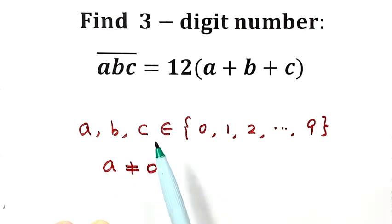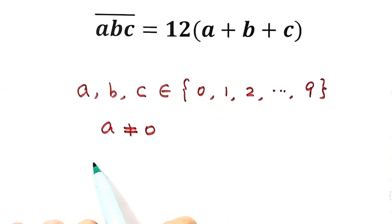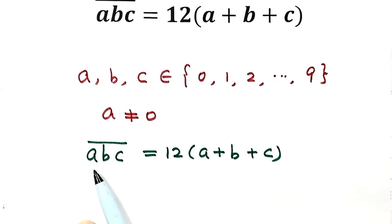So now let's see the equation. Given that the three-digit number ABC equals 12 times A plus B plus C, let's first rewrite the three-digit number.